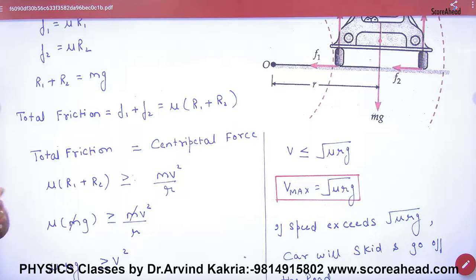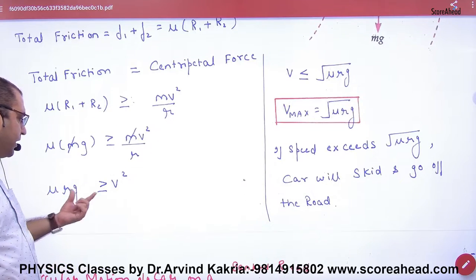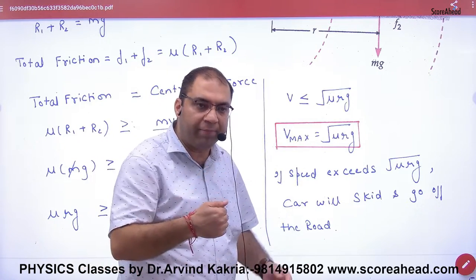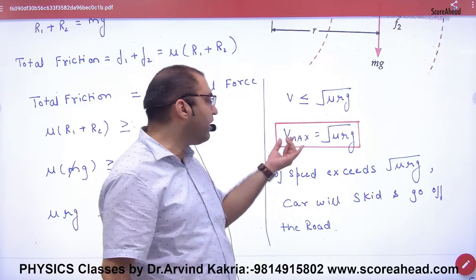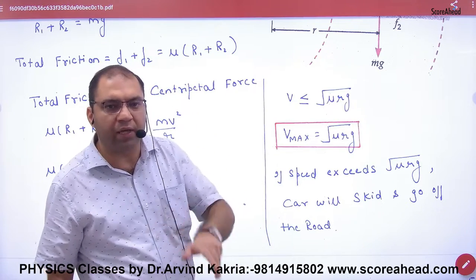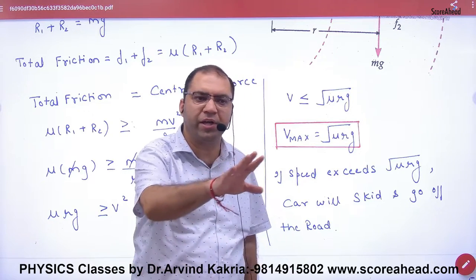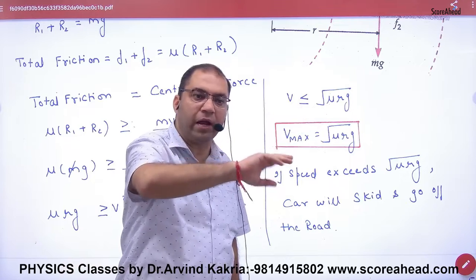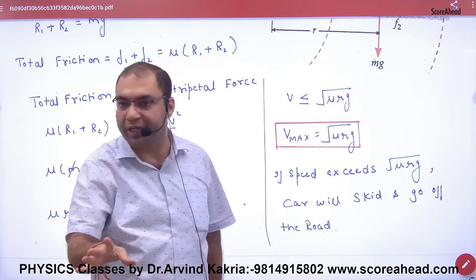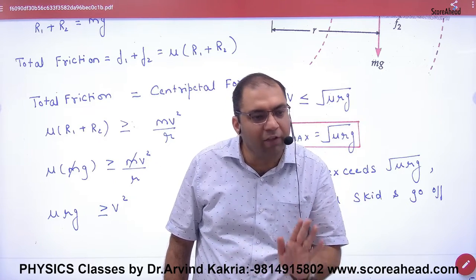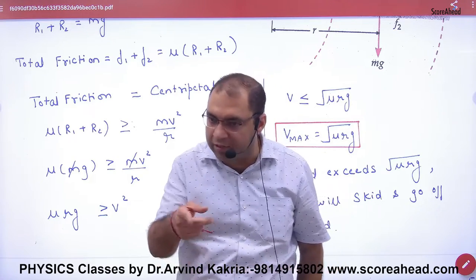So the condition is: total friction μ(R1 + R2) ≥ mv²/r. Since R1 + R2 = mg, the m's cancel, and we get: v ≤ √(μrg). So the maximum speed is v_max = √(μrg). For example, at a roundabout, plug in μ, r, and g — if the answer comes to 80 km/h, then if you go at 81 km/h the car will slip. So the speed limit board will say: maximum speed 80 km/h.